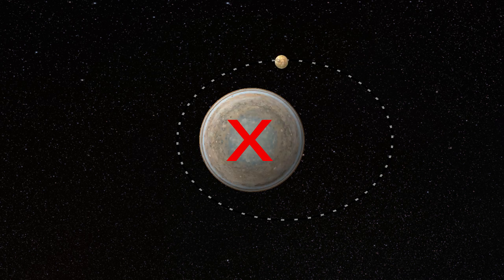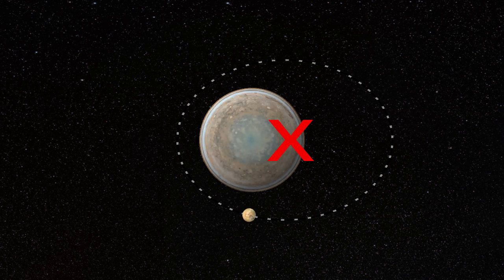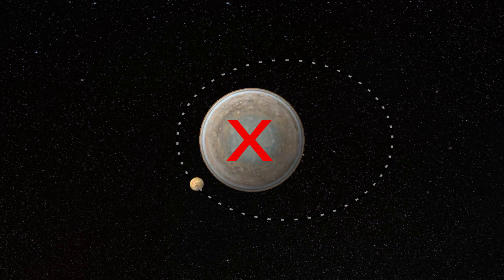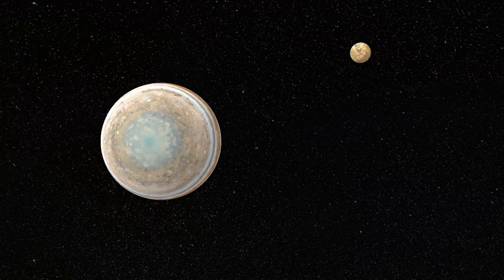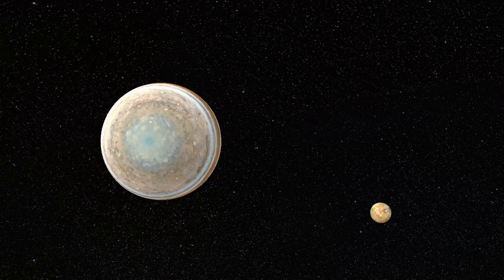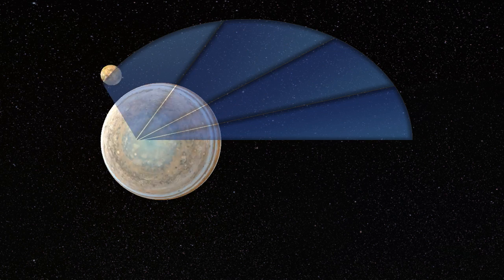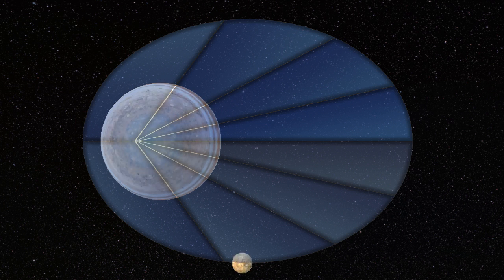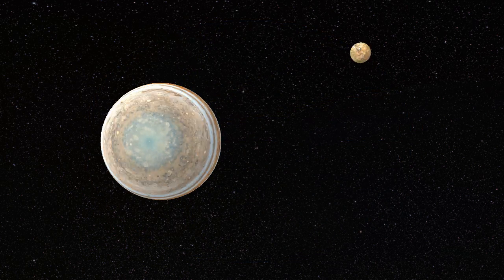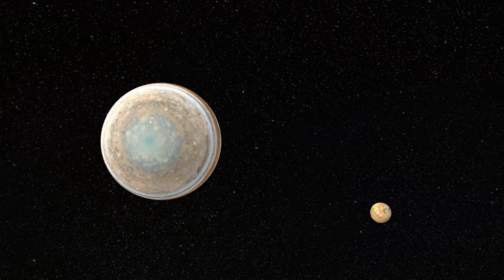Jupiter is found at one orbital focus of the ellipse — not in the center, but pushed over at an elliptical focus. This elliptical orbit has consequences for the Jupiter-Io system. According to Kepler's second law, the moon sweeps out equal areas at equal times. You can see that the distance the moon has moved is farther on one side, meaning the moon is moving slower when it's farther out and speeds up when it comes in closer.